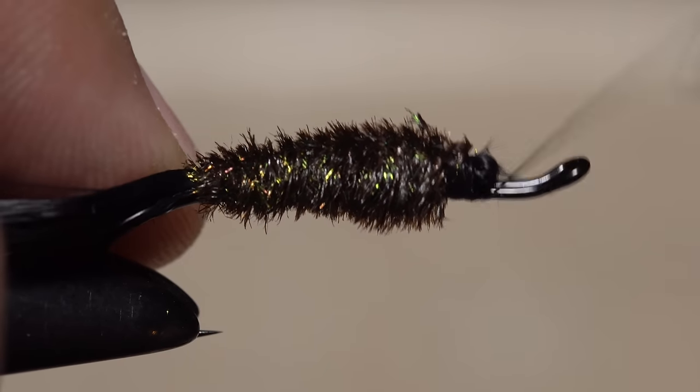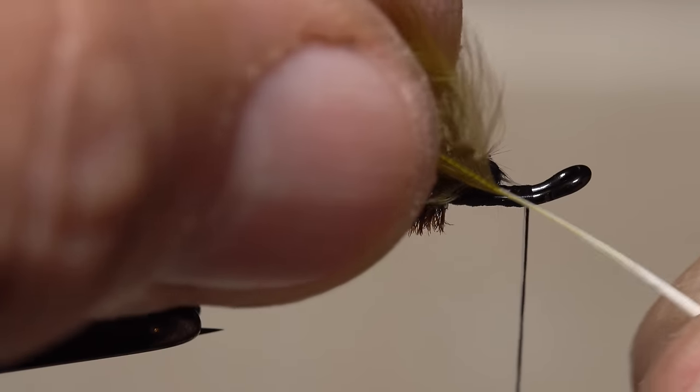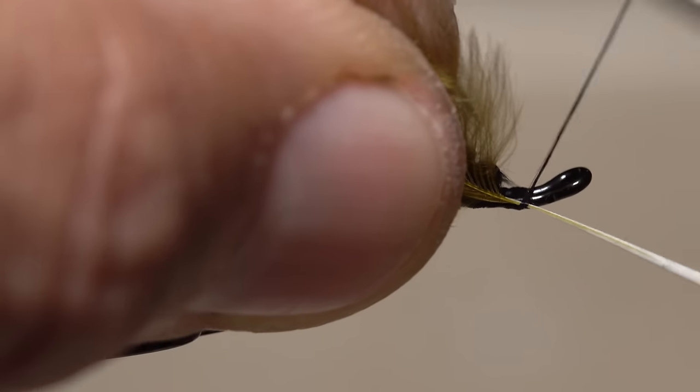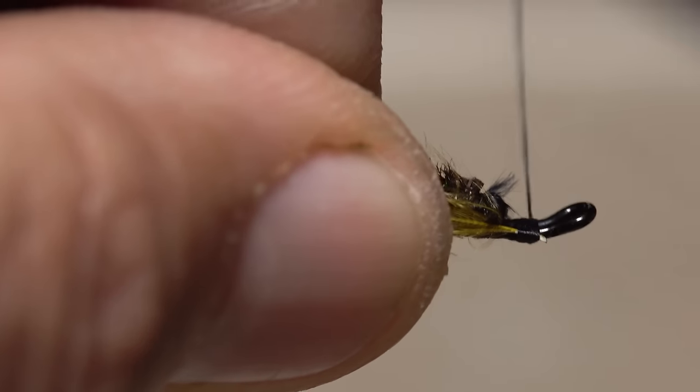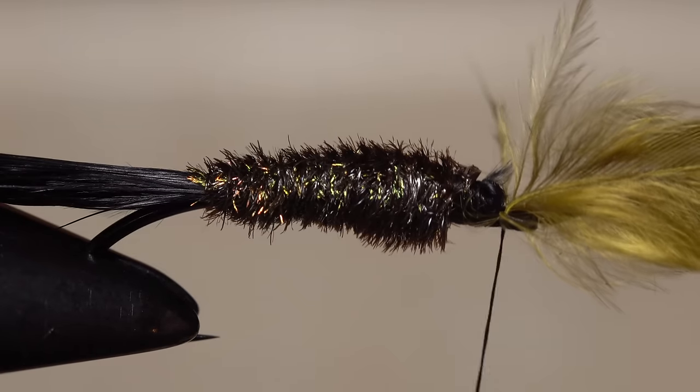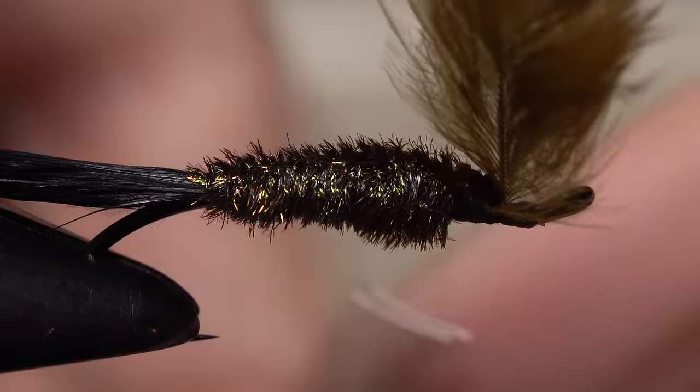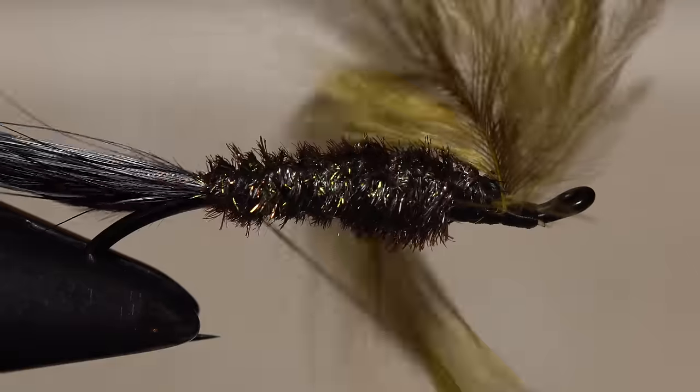Advance your tying thread forward all the way up to the hook eye. Lay the hackle stem against the near side of the hook and take a good number of nice tight thread wraps to secure it there. Use the index finger of your left hand to completely block the camera view as you carefully snip the butt end of the stem off close. Start taking wraps of tying thread rearward and when you reach the body of the fly, pull the hackle feather forward and begin making open spiral wraps over top of the peacock hurl all the way back to the base of the tail.